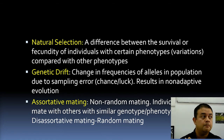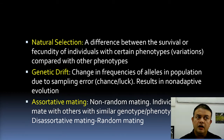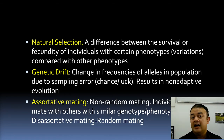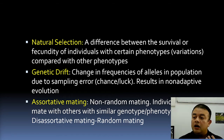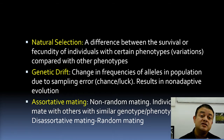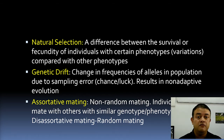Drift is largely overlooked by many evolutionary biologists who still think of Darwin as the final word. Stephen J. Gould, for example, was not strictly a Darwinist — his theory is prominent in paleontology and also supports drift. Drift can happen at many levels, even from the sperm level: millions of sperm in one ejaculation each have slightly different genotypes, and which one penetrates the ovum is a chance event.